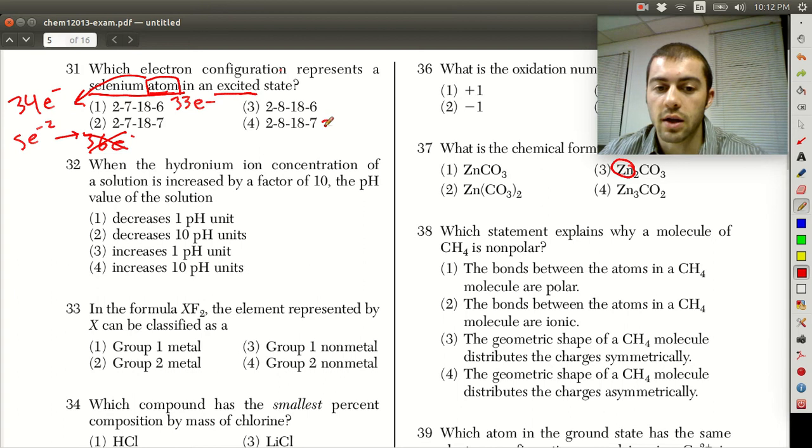2, 18, 7, and 8, that would give us 35 electrons. So right off the bat, answer choices 1 and 4 are incorrect because they don't have the right number of electrons.